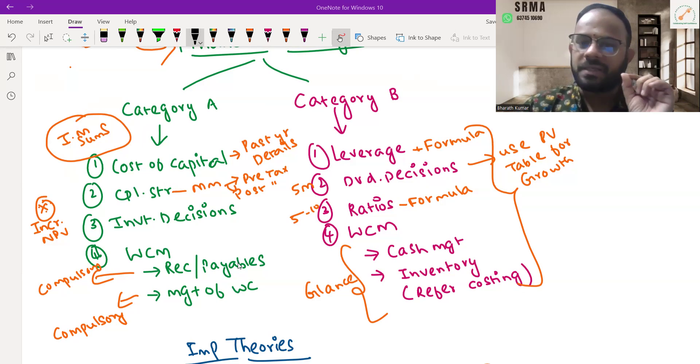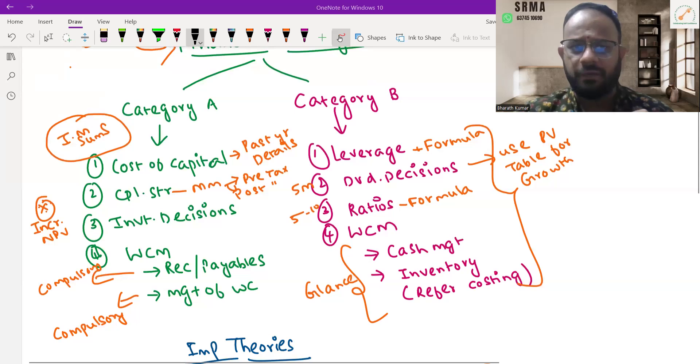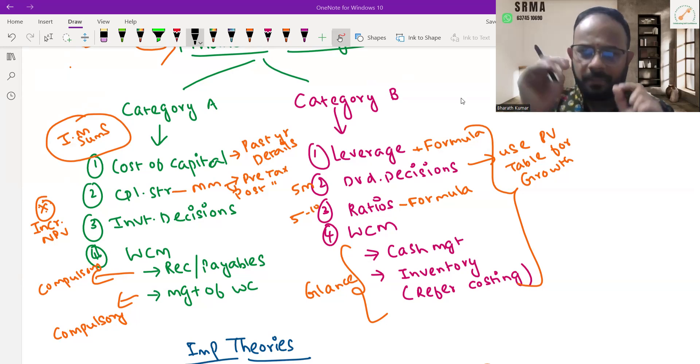In cost of capital, they will ask about dividend growth calculations. Don't confuse cost of capital with dividend decision—they're different. For capital structure, focus on Modigliani-Miller method, pre-tax and post-tax. Investment decisions are Category A, while dividend decision is Category B.